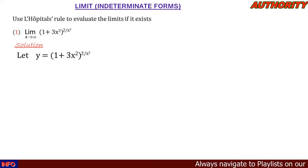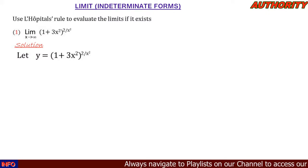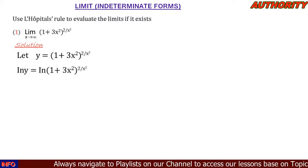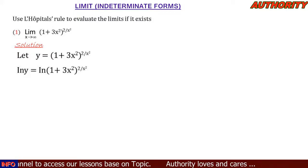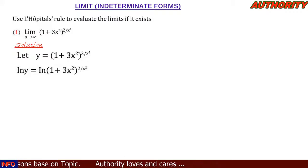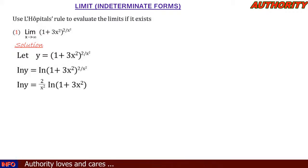From here, let's take the natural logarithm on both sides. So we are going to have ln y equal to ln of (1 + 3x²) raised to the power 2 all over x squared. The exponent 2 over x squared comes down, giving us (2 / x²) · ln(1 + 3x²).